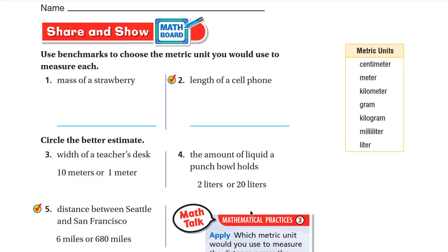Now for Share and Show: use benchmarks to choose the metric unit you would use to measure each item. For the mass of a strawberry — a strawberry is very light, and one kilogram is like a baseball bat, which is much heavier, so we use grams. For the length of a cell phone — a meter is really long and a kilometer requires 10 minutes of walking, so centimeters is the right unit.